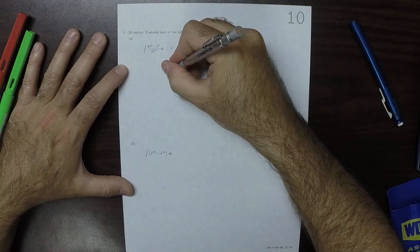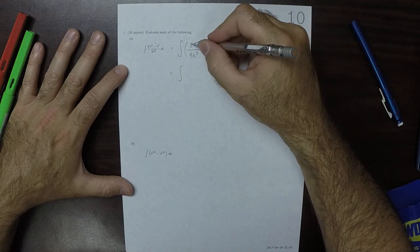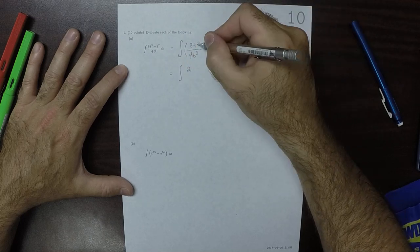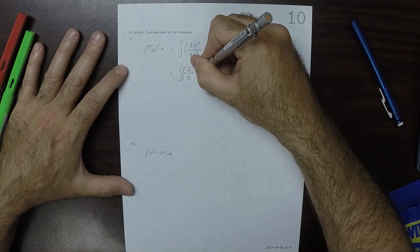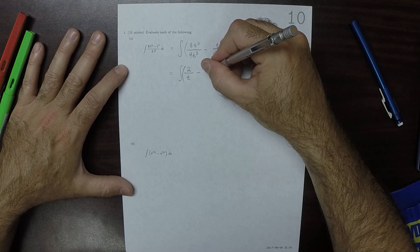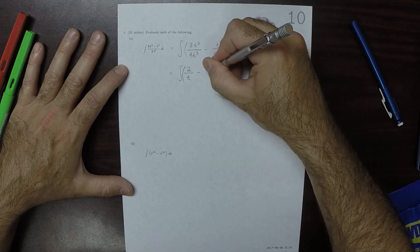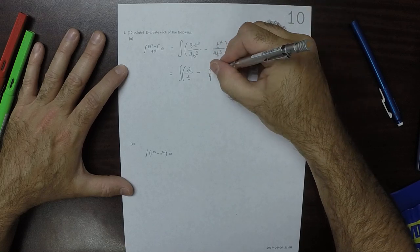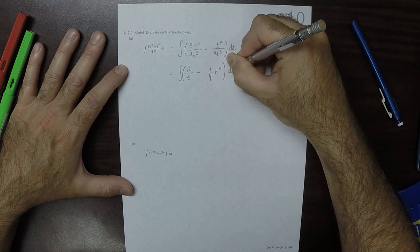So let's simplify these. As for the first one, I'll simplify that to 8 over 4 is 2. And then t squared over t cubed leaves a t in the denominator. Then minus, I can see that there will be a 4 in the denominator. So I'll write that as a 4th, 1 4th. And then t to 7 over t to 3, that's t to 4.